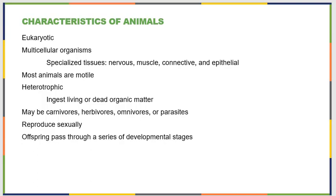A lot of them reproduce sexually, and some are capable of reproducing asexually. For a lot of them, their offspring have to pass through some sort of developmental stages — they don't look like adults when they're born.